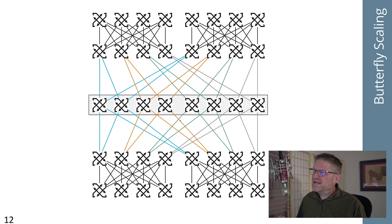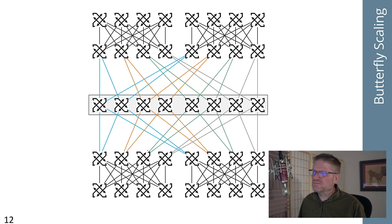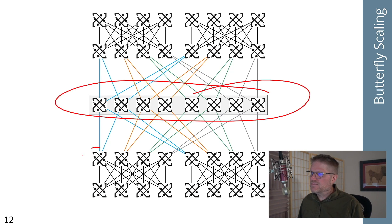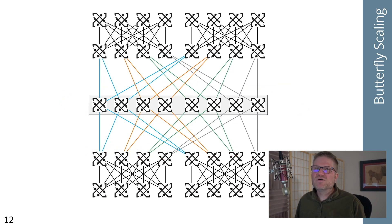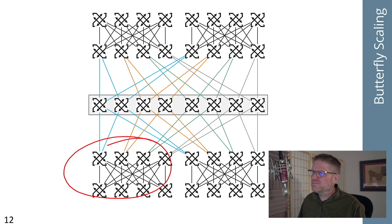In a clove fabric, the number of devices in my top of rack switches is limited by the number of ports on each device, and the number of spine switches is limited by the number of up ports or fabric ports on the top of rack switches. In a butterfly fabric it's very similar — the number of pods is limited by the number of ports in a single fabric.